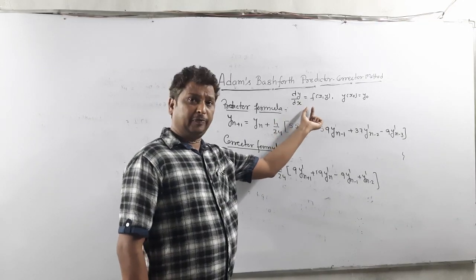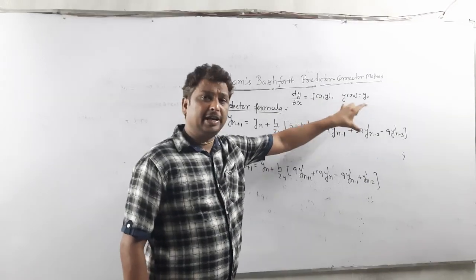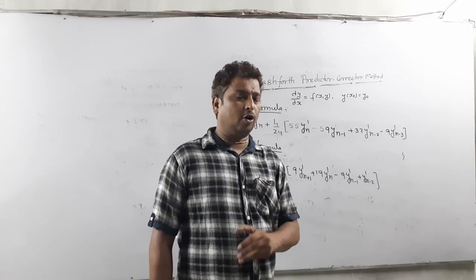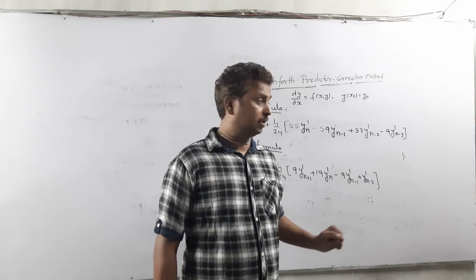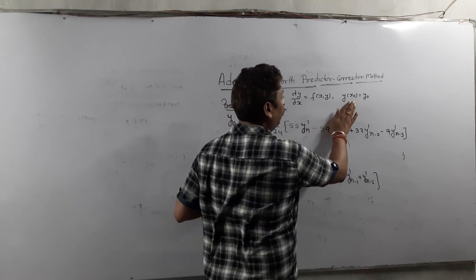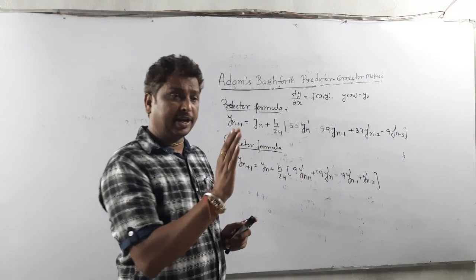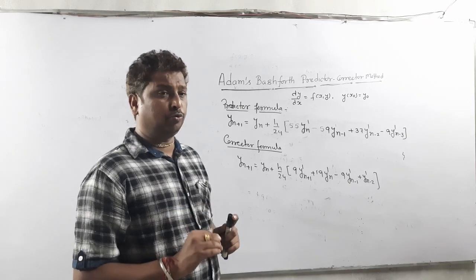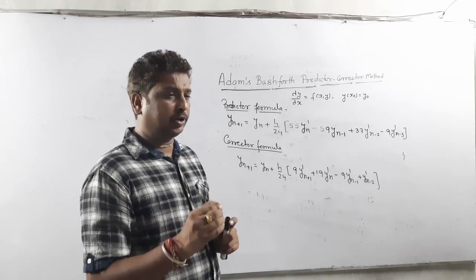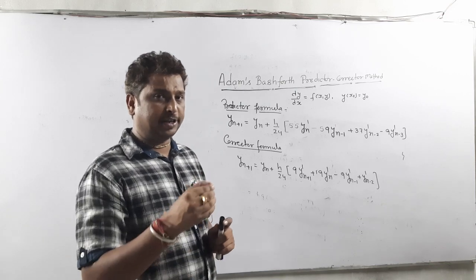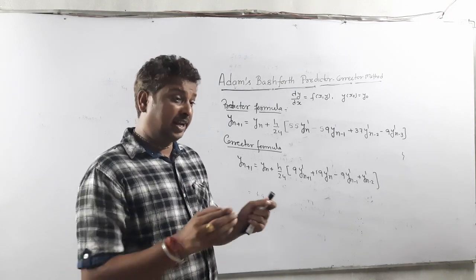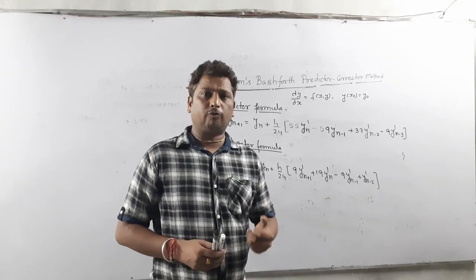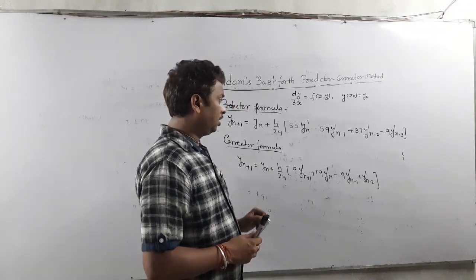They will give a first-order differential equation with some initial conditions — either one or all four. If they give only one initial condition, meaning y at x0 equals y0, then you have to use any method and calculate y1, y2, and y3. This is a very lengthy process, which is why they will often give you all four values.